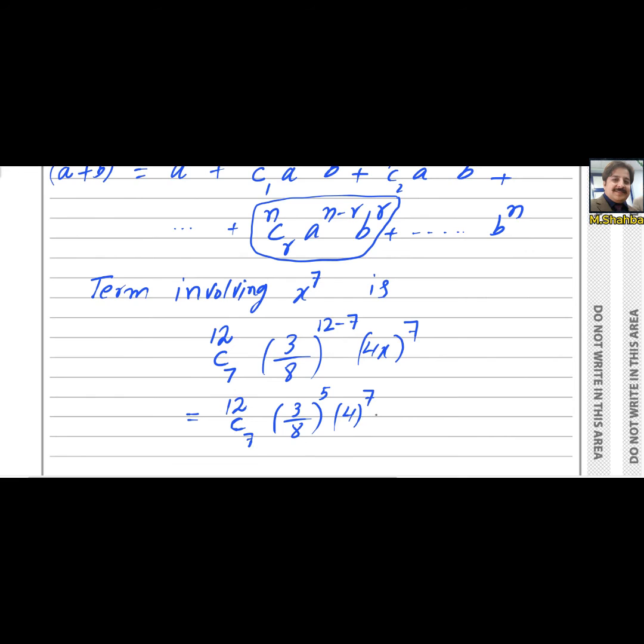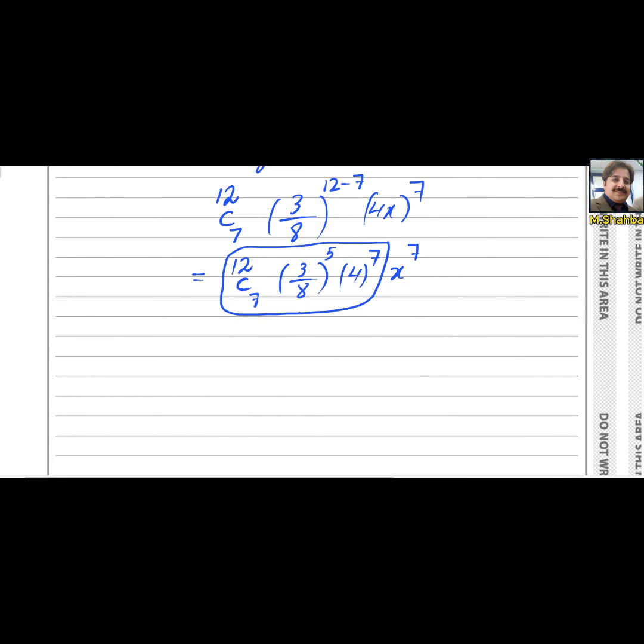Write this thing on your calculator. Once you write this thing to your calculator, the answer of this thing will be 96228 x to the power 7.